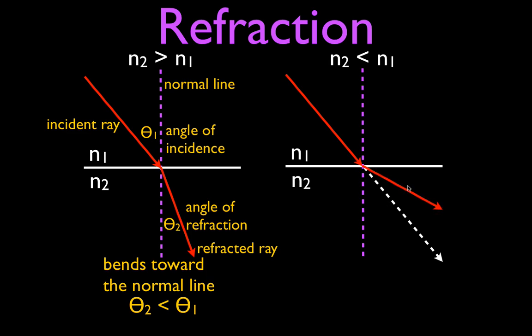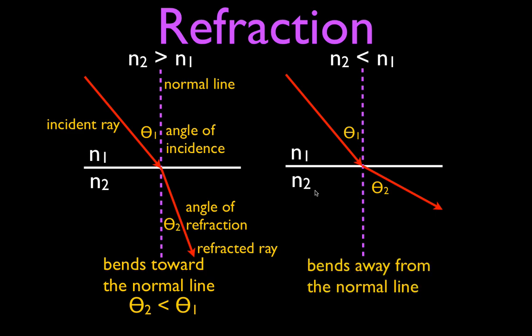I opened this angle up and made it bigger. We still have an angle of incidence, we still have an angle of refraction, we still have an incident ray and a refracted ray. When light goes from a material with a higher index of refraction into a material with a lower index of refraction, it is going to bend away from the normal line, and therefore the angle of refraction will be greater than the angle of incidence.